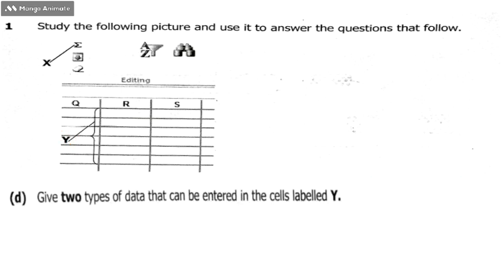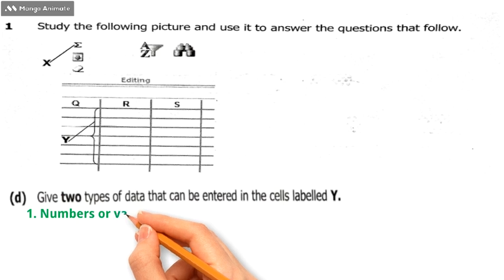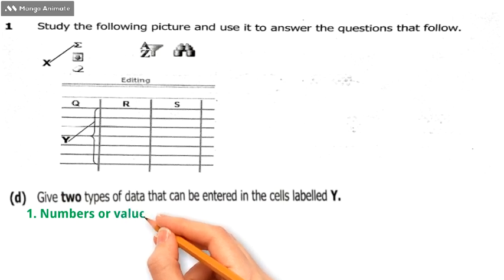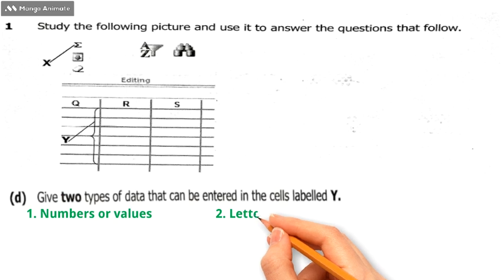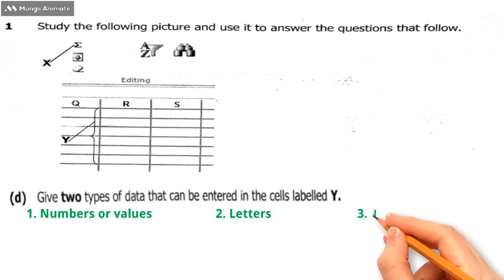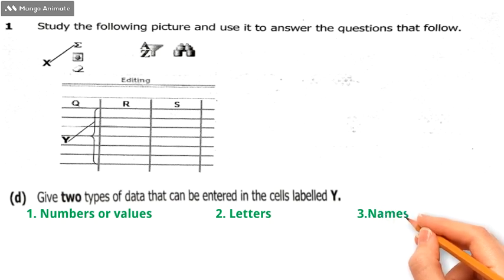We go to question number 1d which is give two types of data that can be entered in the cell labeled Y. One: numbers or values. Numbers or values you can enter them in the cells that are labeled Y. We can also enter letters. We can also enter letters like you can enter A or B in that cell.